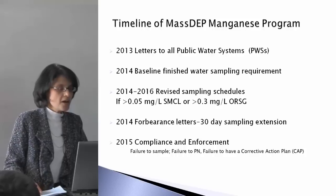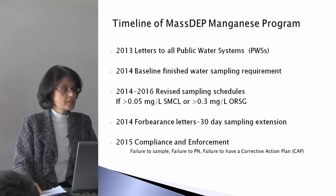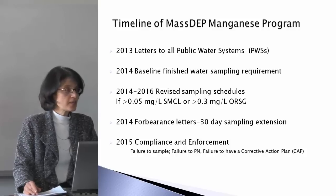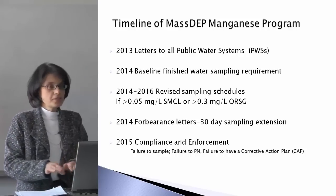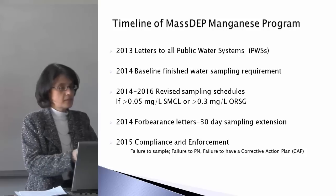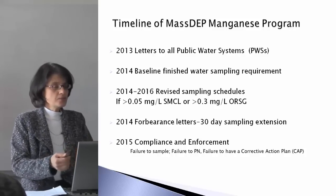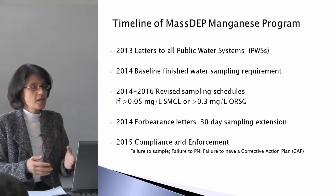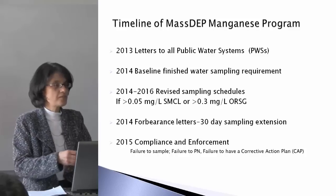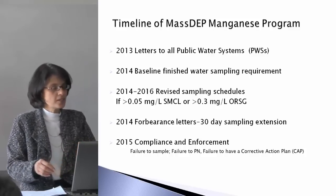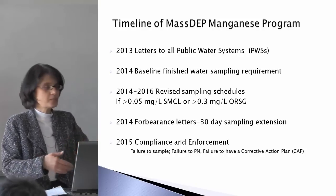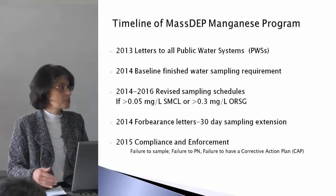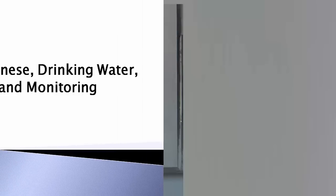The type of notices that will be sent include something called a notice of non-compliance — something you probably don't want to receive — and it would be for failure to sample, or failure to provide public notice, or failure to take a corrective action. Those requirements are going to be clearly explained to you. When you submit sampling results to MassDEP and you trigger one of these health advisories or the 0.05 aesthetic standard, there's a process that goes into place. A letter is sent from the regional office stating you have exceeded the threshold and listing all the requirements: public notice, sampling, monitoring, and corrective action plan. It's all in the letter, so you don't have to guess. You could even call the region and have a discussion about it before the letter goes out.